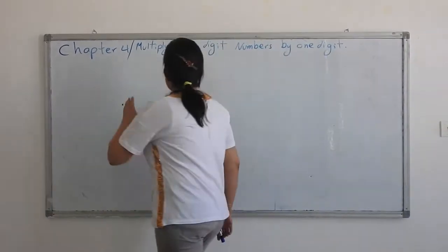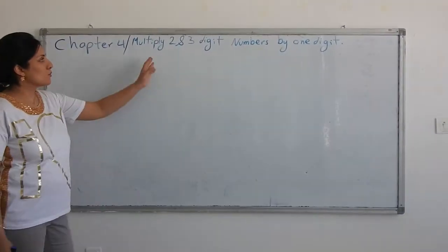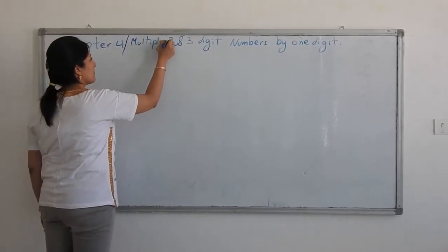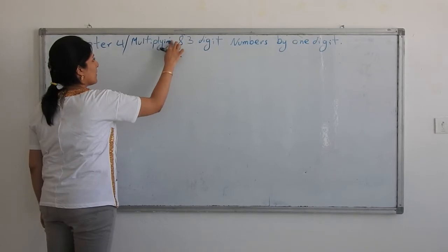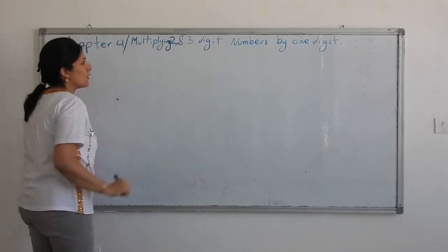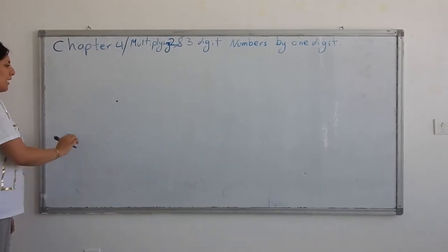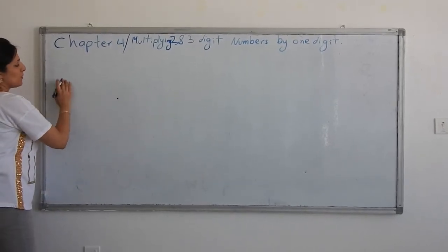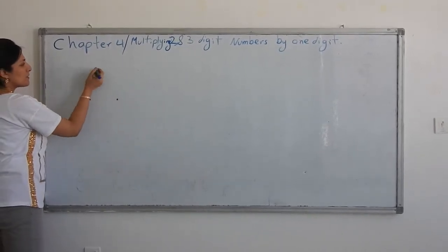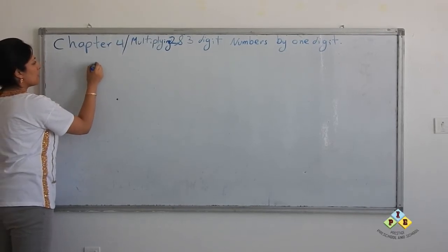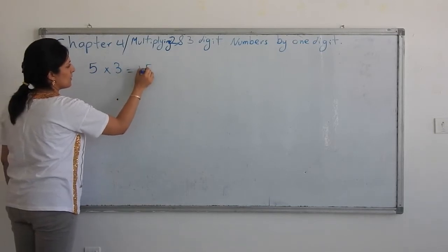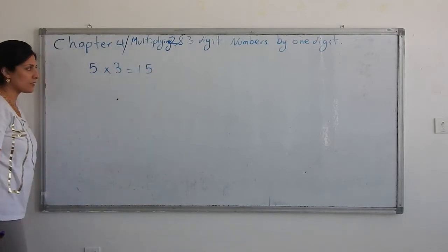It's about multiplying two and three digit numbers by one digit number. How we can multiply two or three digit numbers? Before we had simple multiplication, like 5 times 3, 15. A digit by digit number.